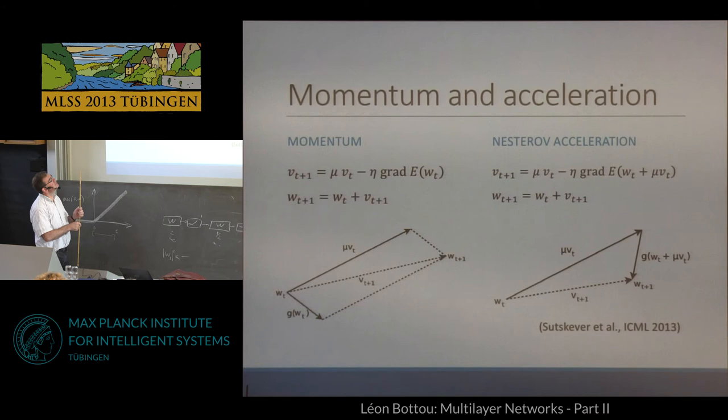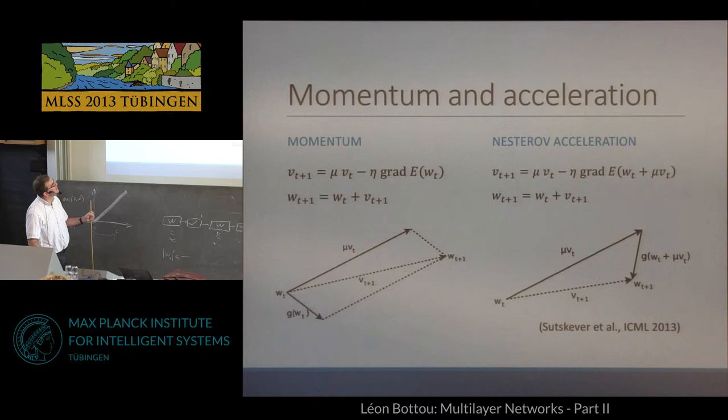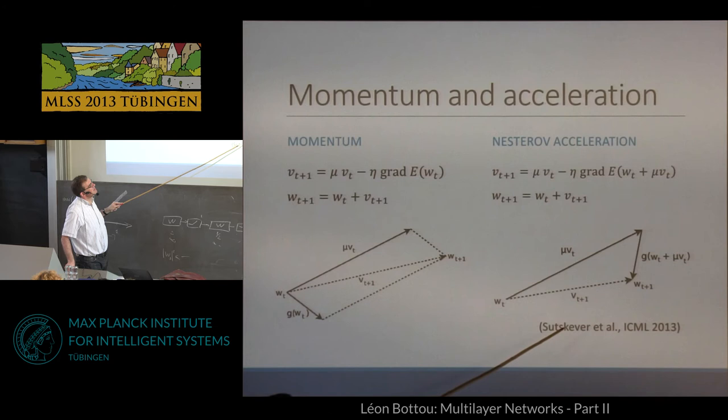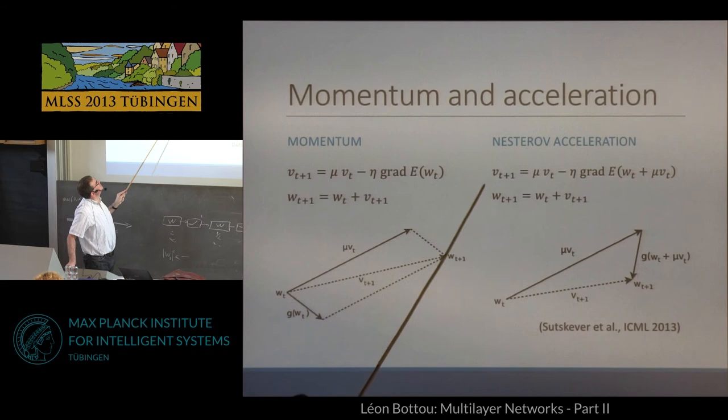You have w_t, the previous search direction multiplied by mu — say mu is something like 0.9 — you contract it a little bit, then add the gradient, and that's your new direction. This has interesting properties and works well in certain cases, though sometimes it's too fast and difficult to adjust. There is another idea called Nesterov acceleration that's popular in the literature. The expression by Ilya Sutskever makes it easier to understand: v_{t+1} = mu·v_t + gradient at (w + mu·v_t), then the update.